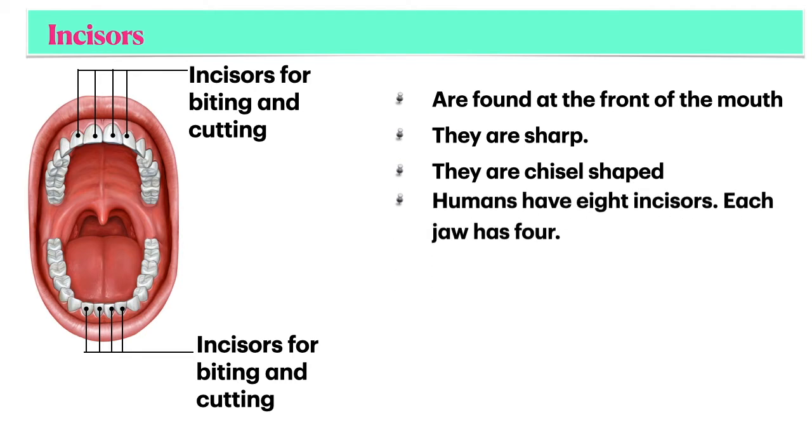Humans have eight incisors. Each jaw has four. They have one root.